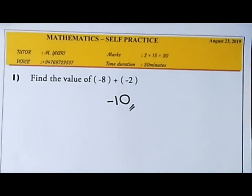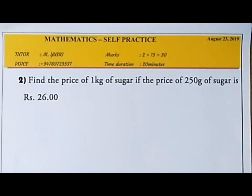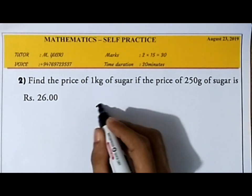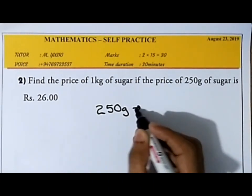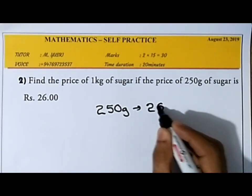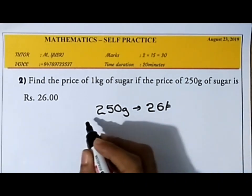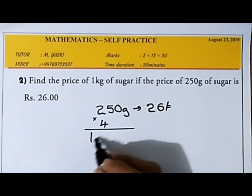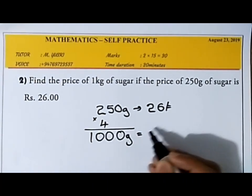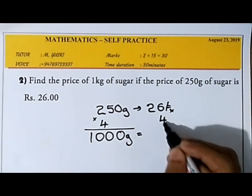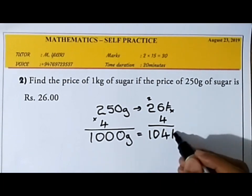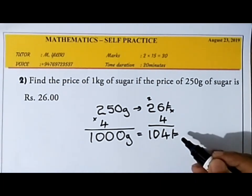Find the price of 1 kilogram of sugar if the price of 250 grams is 26 rupees. If 250 grams equals 26 rupees, then to find 1 kilogram we multiply by 4, giving 1000 grams. So 26 multiplied by 4: 6 fours are 24, carry 2; 4 twos are 8 plus 2 is 10; carry 1; 4 ones are 4 plus 1 is 5. That gives 104 rupees. Correct answer earns 2 marks.